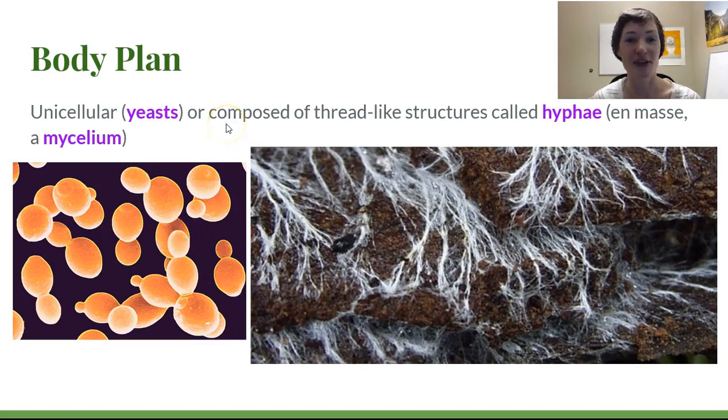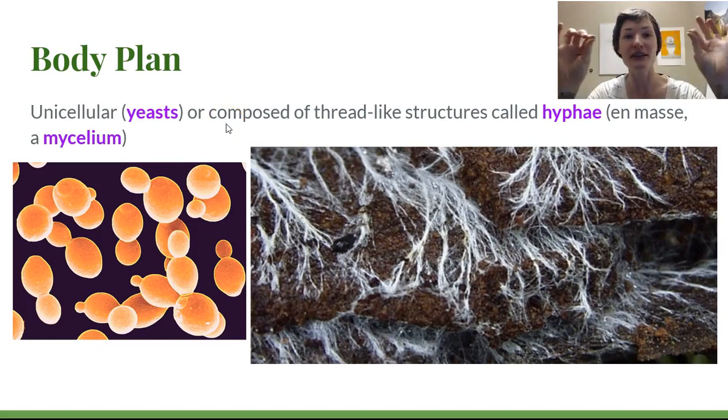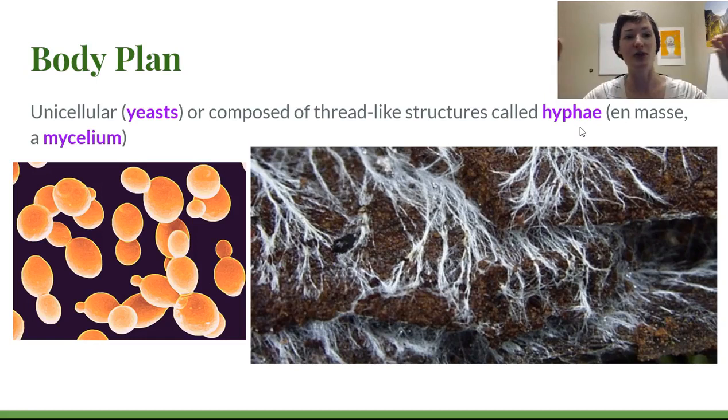The other option for fungi is to make these long filamentous tubes called hyphae. So their cell structure is a long tubular cell. In earlier groups these aren't divided up into multiple compartments. It's just one long tube. In later groups they'll start to specialize and get these cellular components to their hyphal cells. So hyphae is like multiple and hypha is singular. So if I took off this e here it would be hypha. If I'm referring to one filament it's a hypha. If I'm referring to many it's hyphae.